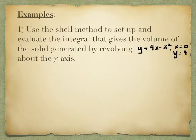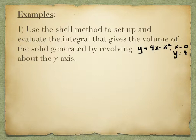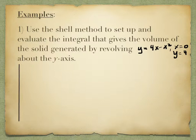Let's take a look at one we can do. We're going to use the shell method to set up and evaluate an integral to find the volume of the solid generated by revolving the region bounded by y = 4x − x², x = 0, and y = 4, rotated around the y-axis. You're always going to start with a picture of the region, so that you can identify where the radius and the height are.